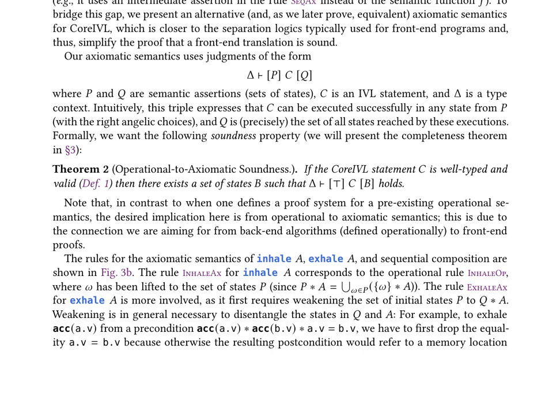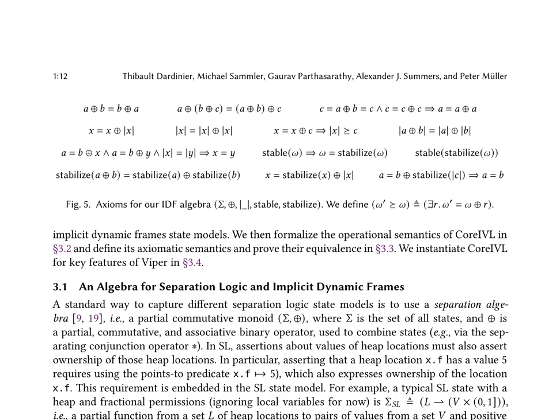The paper discusses the formal foundations for translational separation logic verifiers, focusing on decomposition of proofs for main and main_IVL into smaller parts. It highlights the exhale-havoc-inhale pattern in the core IVL code, which follows the sequence: exhale the precondition, havoc the variables modified by the statement, and inhale the postcondition. This pattern is used to justify CSL triples for statements like q = new cell, q.v = pages.v, tmp = pages.v, and free q. The paper also presents an operational and axiomatic semantics for the core IVL language defined in Figure 1.